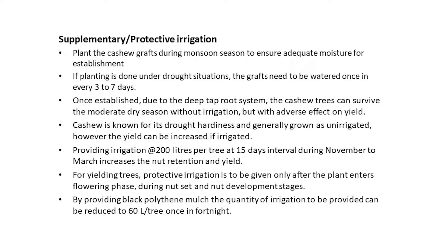Providing irrigation at 200 liters per tree at 15-day intervals during November to March increases nut retention and yield. For yielding trees, protective irrigation is to be given only after the plant enters the flowering phase, during nut set and nut development stages. By providing black polythene mulch, the quantity of irrigation to be provided can be reduced to 60 liters per tree once in a fortnight.